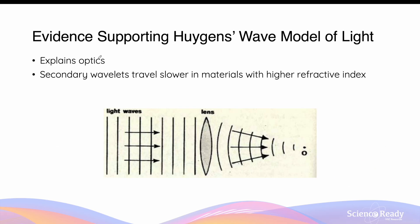Huygens' wave model explains optics, as he suggested that the secondary wavelets that make up the wavefront would travel slower in materials that have a higher refractive index, such as the glass that lenses and mirrors are made of. For example, when the longitudinal wavefronts of light travel through a convex lens, the wavelets that travel through the thickest part of the lens would exit after the wavelets that travel through the thinner parts, resulting in a curved and converging pattern for the wavefront. Conversely, the same idea can be used to explain the effect of diverging lenses.